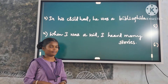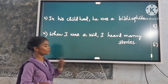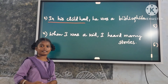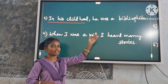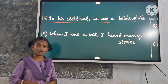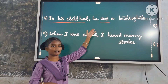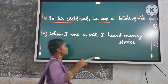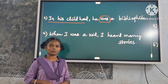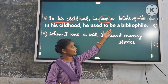Third example: 'In his childhood, he was a bibliophile.' Here, 'in his childhood' is a time expression. But the verb in the main clause is 'was' — that is, a stative verb. So we use only 'used to'. Replace it with 'used to be'. Answer: 'In his childhood, he used to be a bibliophile.'